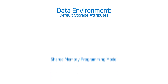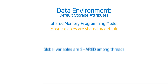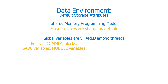OpenMP is a shared memory programming model. Most variables are sitting on the heap and all the threads can see them. Global variables are shared among threads. Basically, anytime they're on the heap, they're shared. So a Fortran common block, a Fortran save variable, module variables. In C, file scope variables or variables with the static qualifier on them — those are shared.